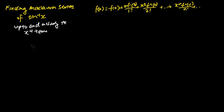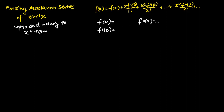We can actually express the Maclaurin series of sine inverse x using the formula shown in the top right-hand corner of the screen, in which a function can be expressed as an infinite series. Here, f(0) is the function evaluated at x equals 0, f'(0) is the function differentiated once and evaluated at x equals 0, and then we have the function differentiated twice, three times, and four times, all evaluated at x equals 0. We will be expressing the Maclaurin series of sine inverse x up to and including the x to the power of four terms in this video.